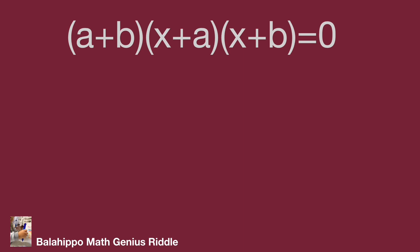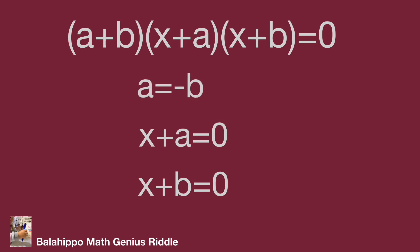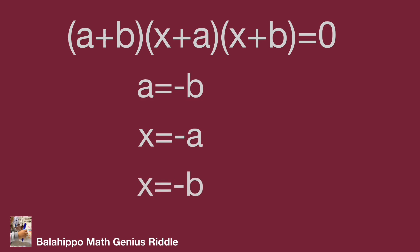So we get: a plus b equals zero, or x plus a equals zero, or x plus b equals zero. Therefore, a equals negative b, or x equals negative a, or x equals negative b. That is the value for x.